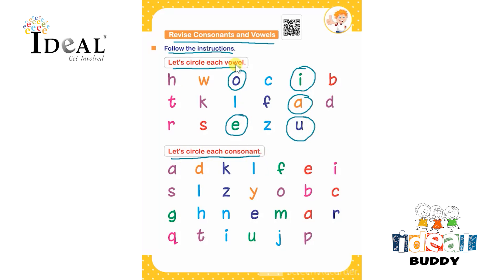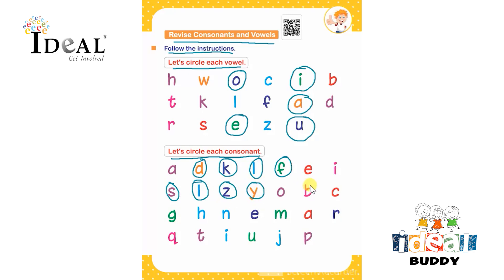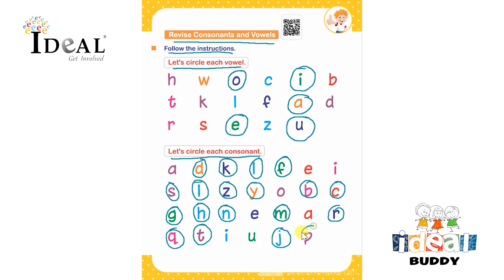You can give a tip to the child: they have to exclude all the vowels given and circle the rest of the letters, which are the consonants — D, K, L, F, S, L, Z, Y, B, C, G, H, N, M, R, Q, T, J, and P.